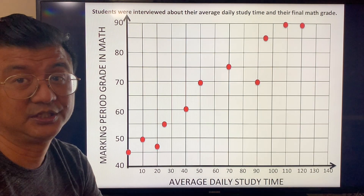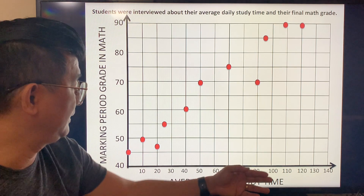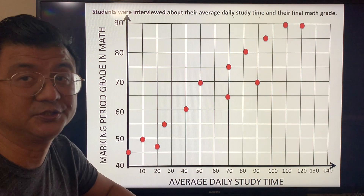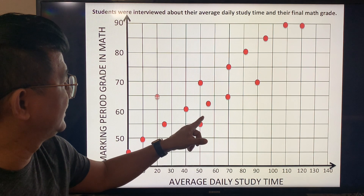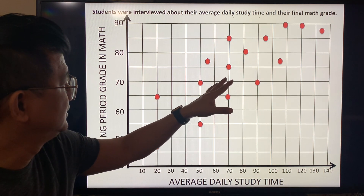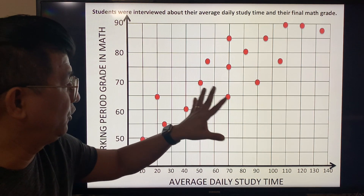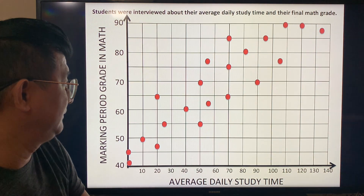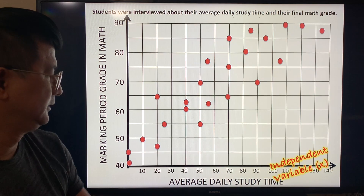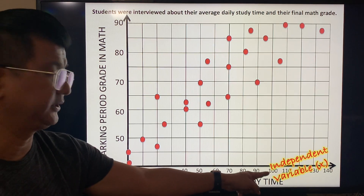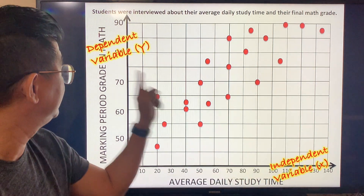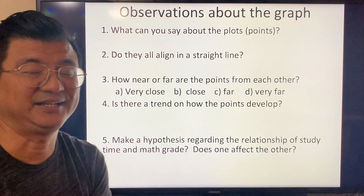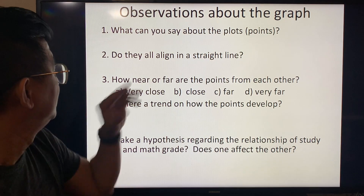Different students shared their data about study time and their marking period grade. These are the results — points scattered all over the graph. That's why we call it a scatter plot. This is the independent variable and this is the dependent variable.